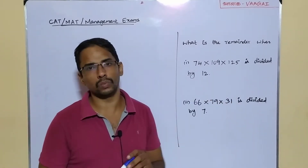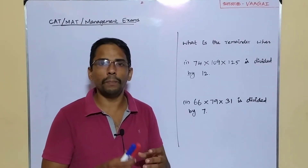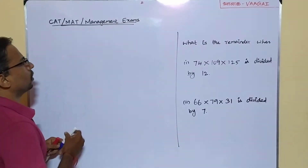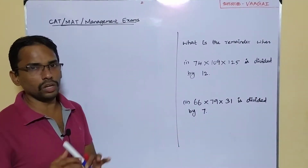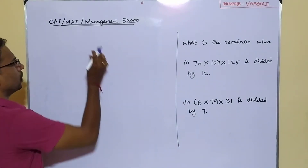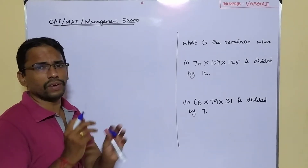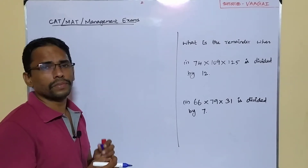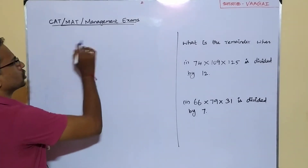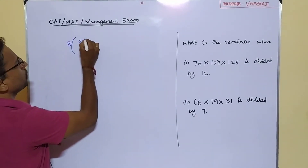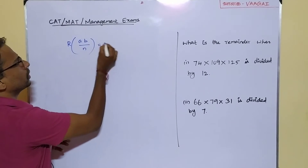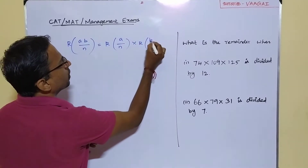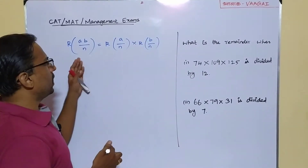Let's now see the procedure and approach to solve these questions, for which we need a very basic but important property used with remainders. The property is the property of product: the remainder of A×B divided by n is equal to the remainder of A divided by n, multiplied by the remainder of B divided by n. This can be extended for any number of numbers.